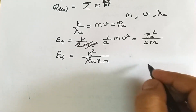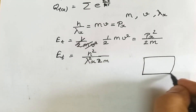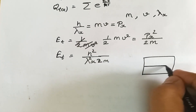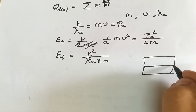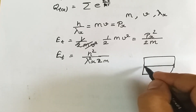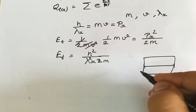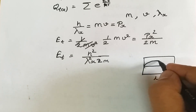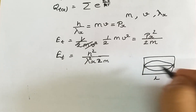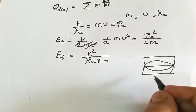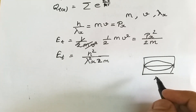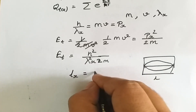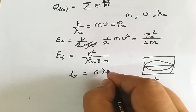Now, the particles are confined — suppose we have a box and the particles are moving inside it. The motion of the particle will be equal to the length of that box. Since particles move in the form of waves, they will form a single crest and single trough. This is the formation of stationary waves. If L is the length of the box, we can write L_x equals n times lambda_x divided by 2.